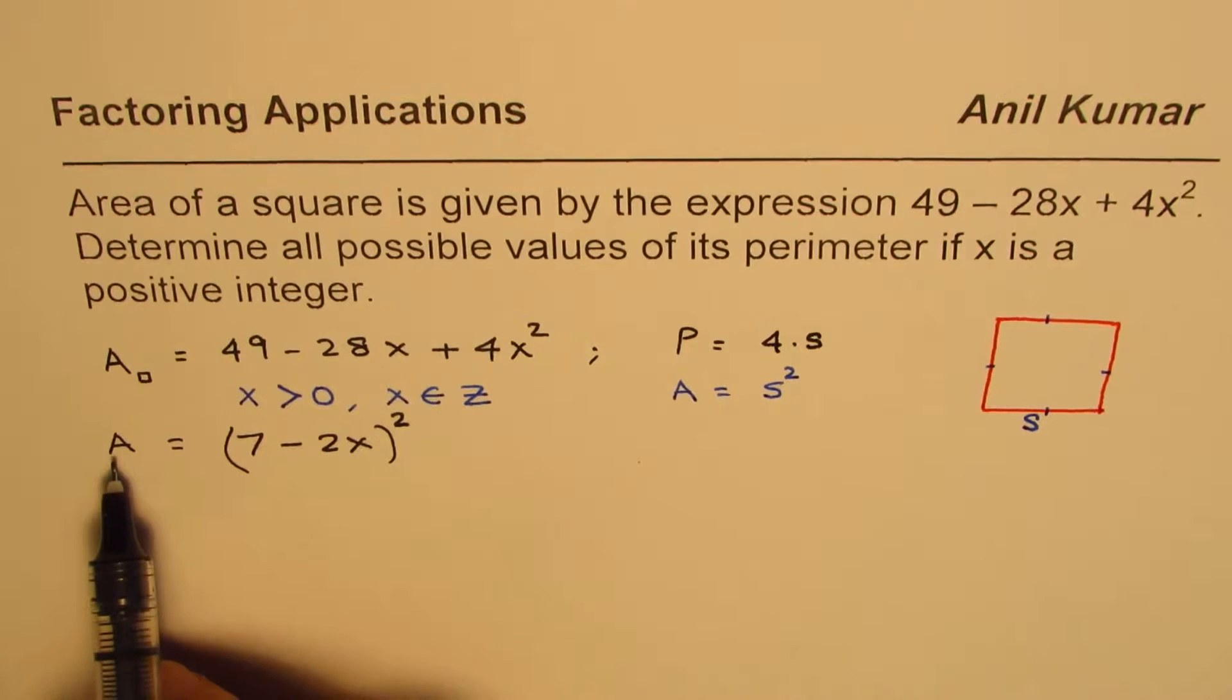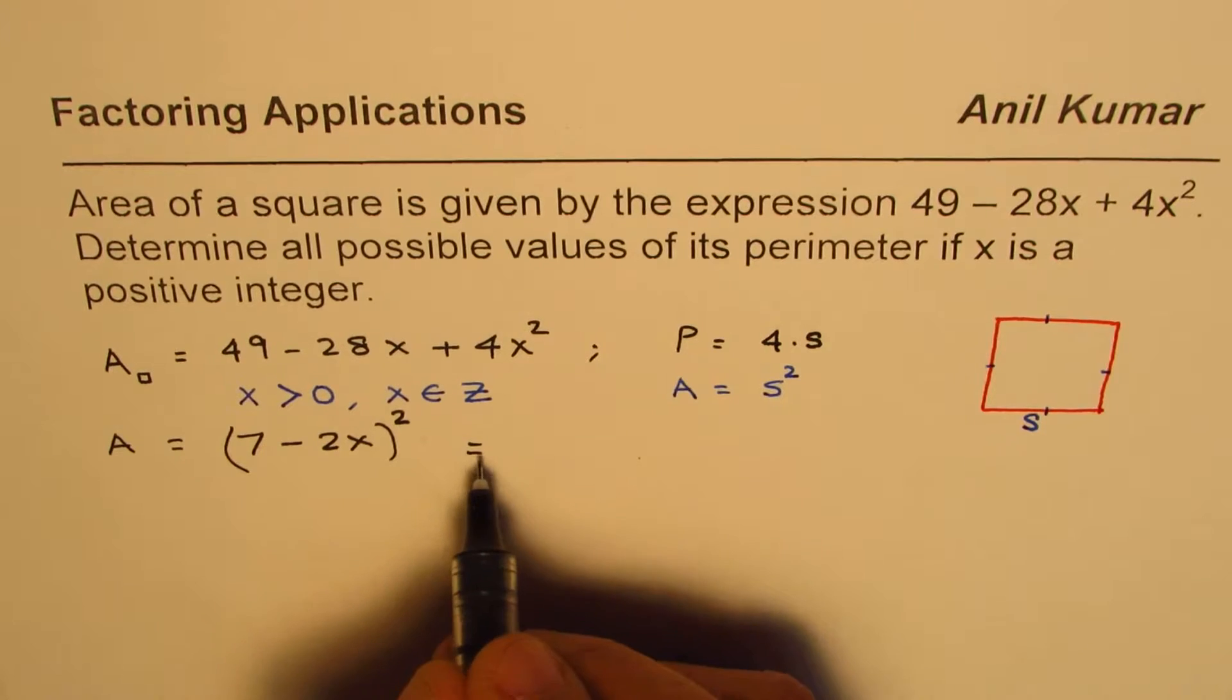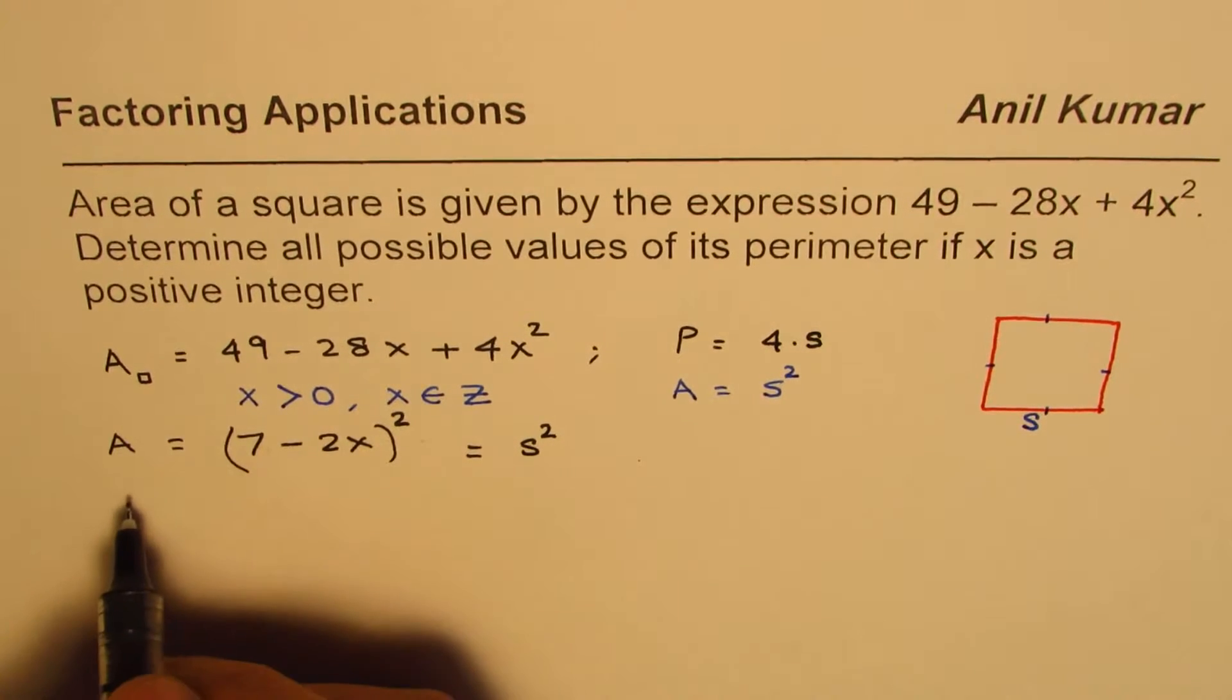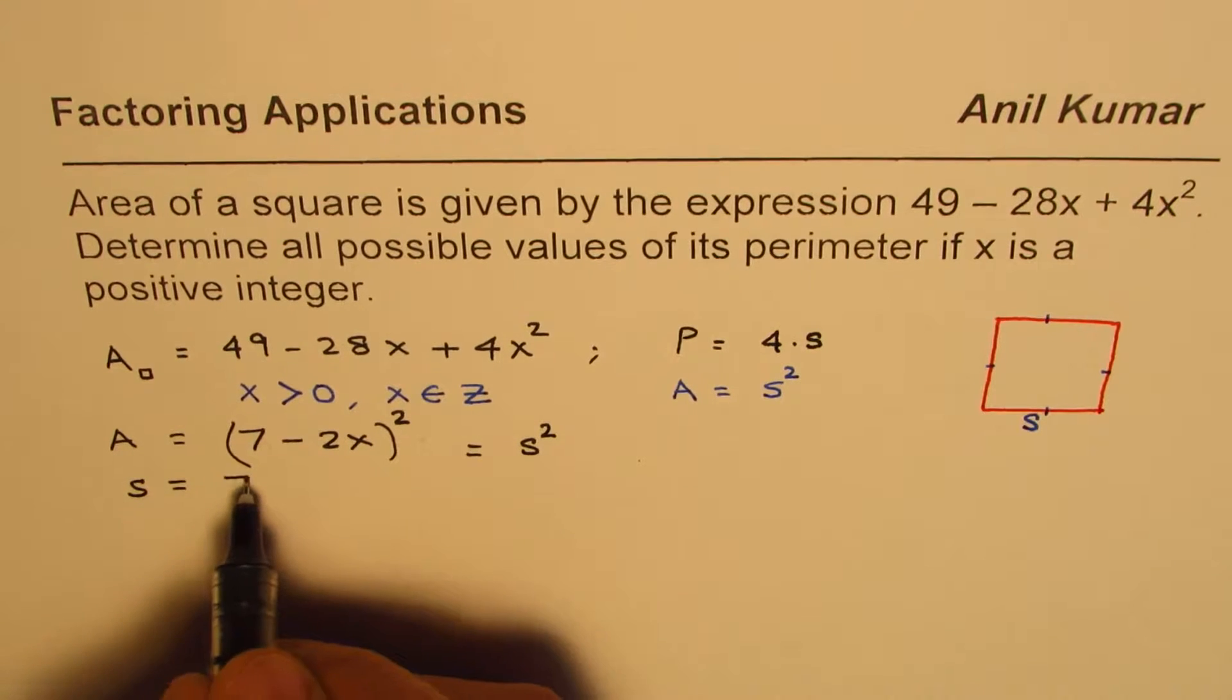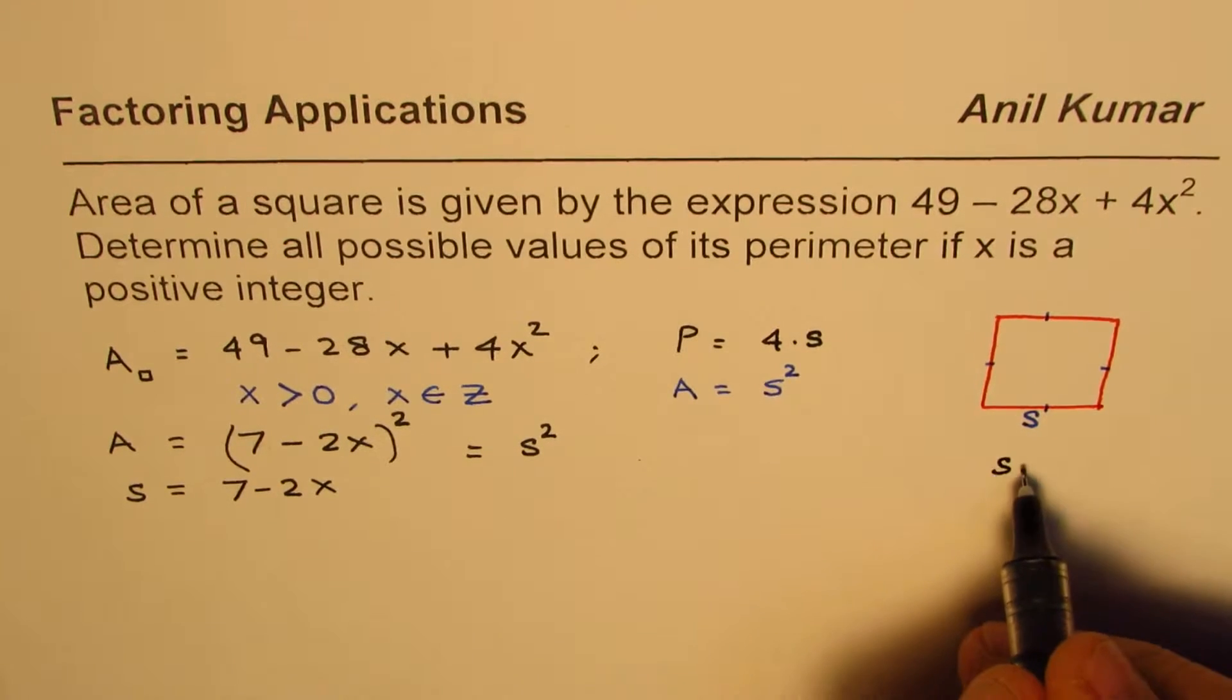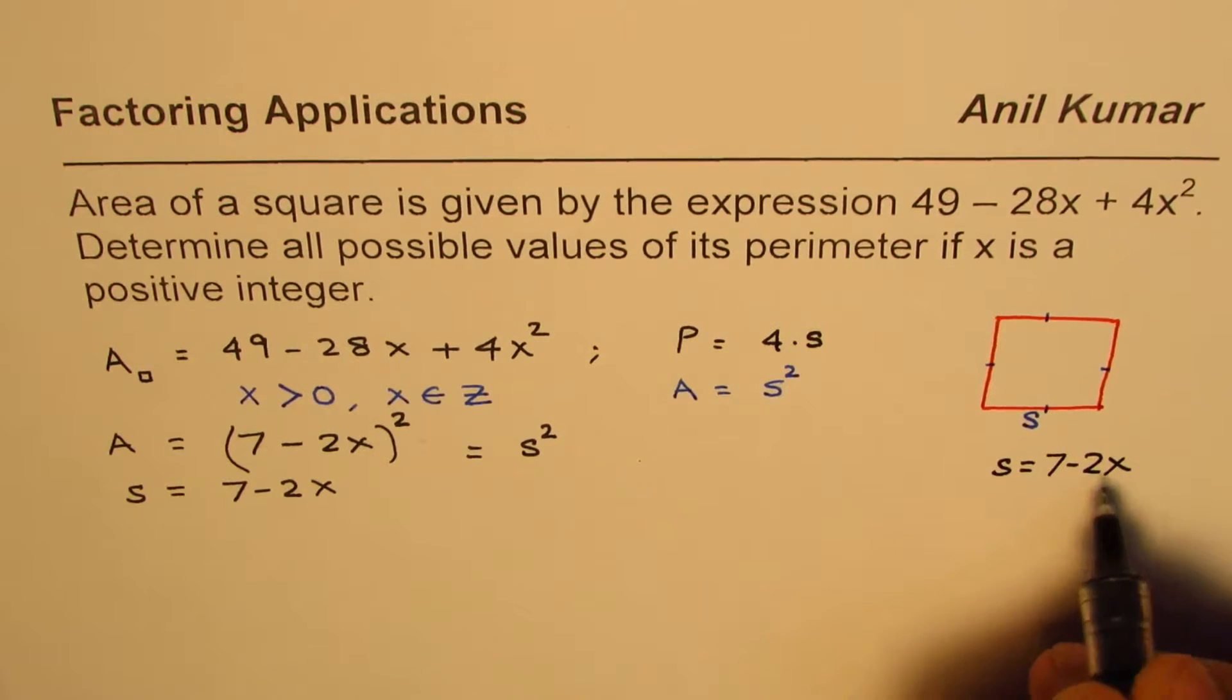Now, area is 7 minus 2x whole squared. We know area is side squared. That means each side length is 7 minus 2x. So here what we get is that the side length is 7 minus 2x.